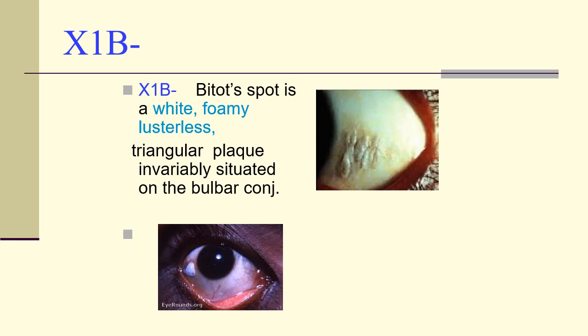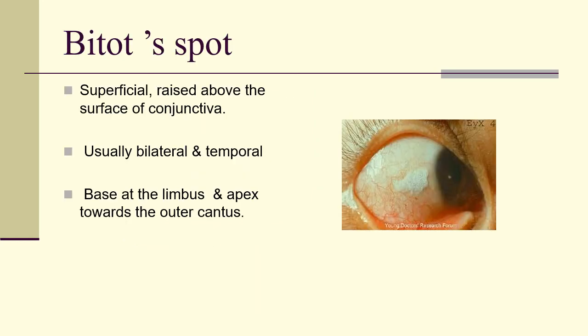X1B is the Bitot spot. The Bitot spot is a white, foamy, lusterless triangular plaque invariably situated on the bulbar conjunctiva. It is an extension of the xerotic process seen in stage X1A. The Bitot spot is a raised silvery-white, foamy triangular patch of keratinized epithelium situated on the bulbar conjunctiva in the interpalpebral area. It is usually bilateral and temporal, and less frequently seen on the nasal side.